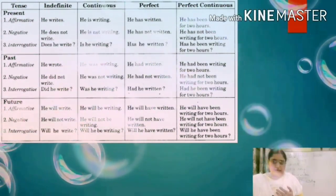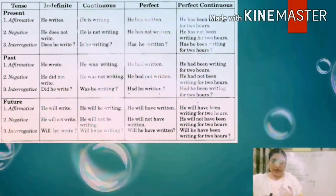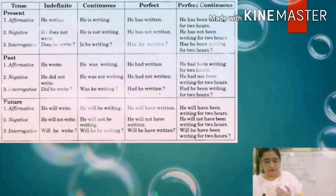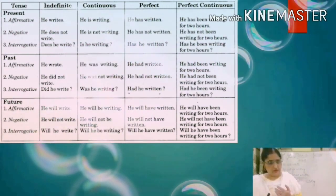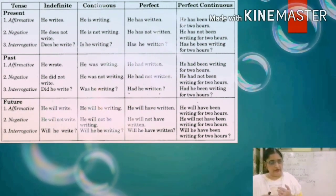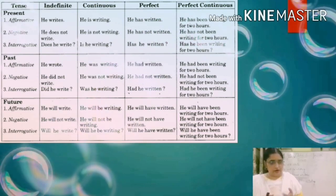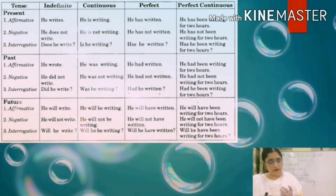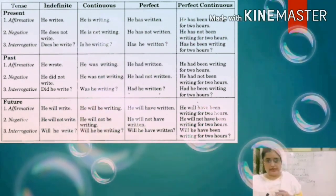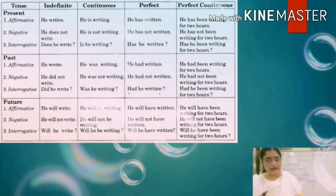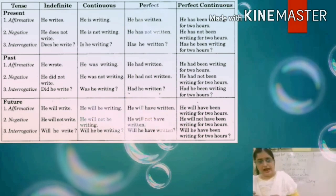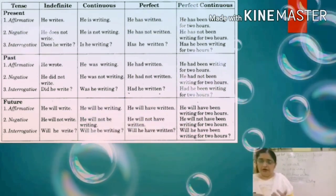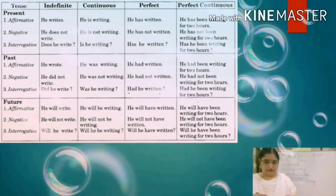In negative, because it is past tense, the negative form becomes: 'he did not write'; 'he was not writing'; 'he had not written'; 'he had not been writing for two hours.'